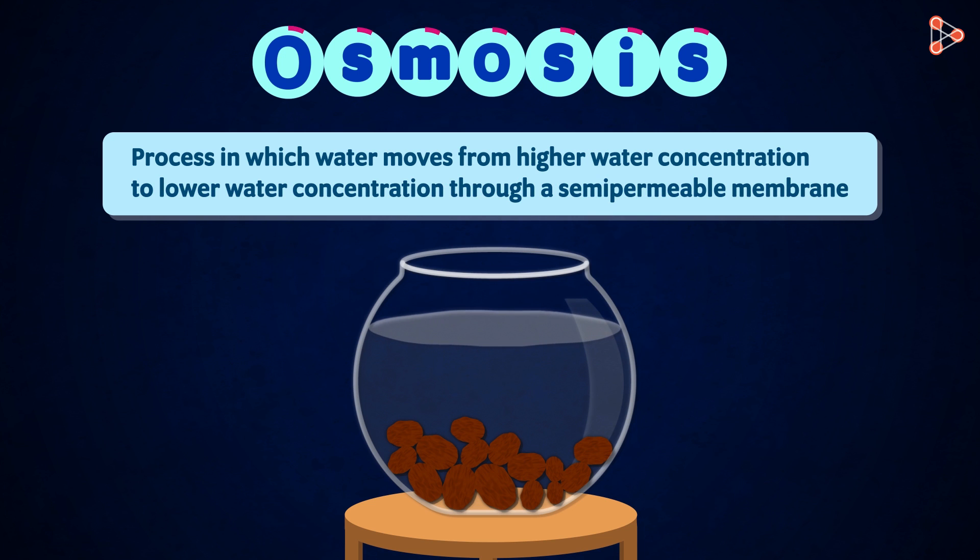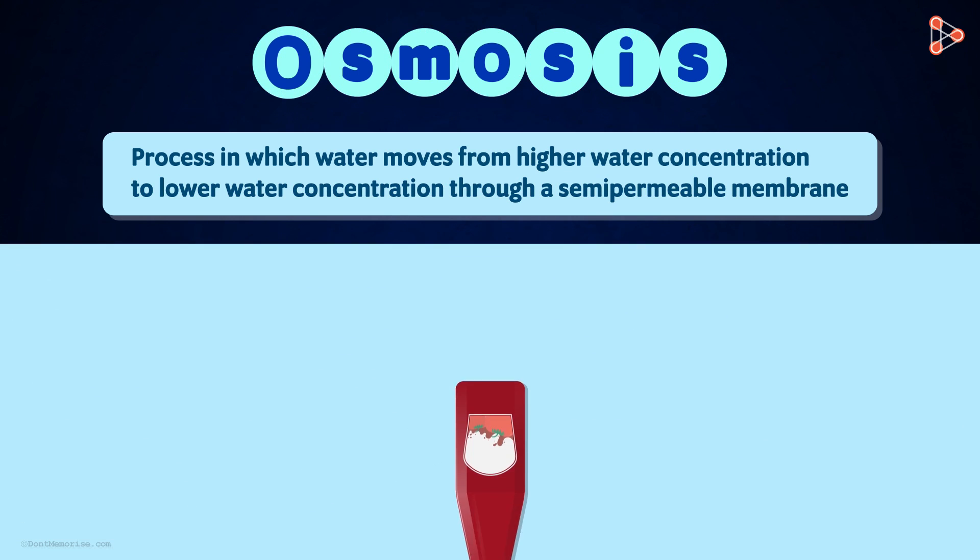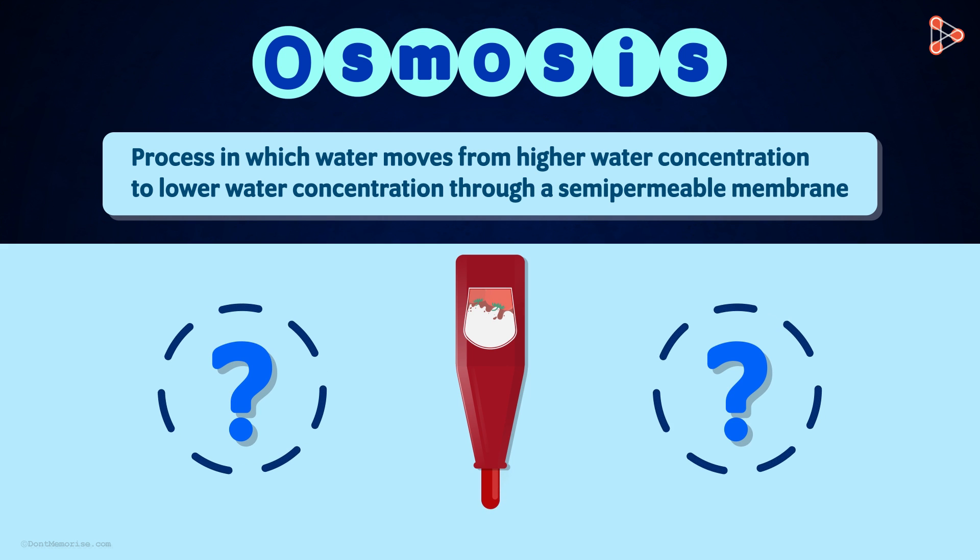An interesting thing to know about osmosis is that the movement of water is affected by the amount of a substance dissolved in it. And what does this mean exactly? Let's conduct an experiment to understand it better.